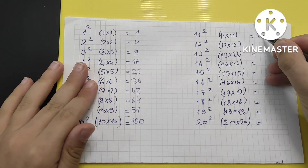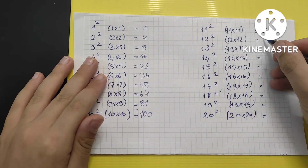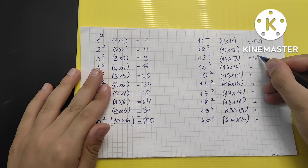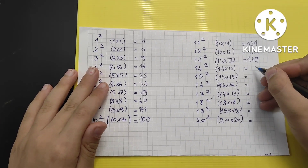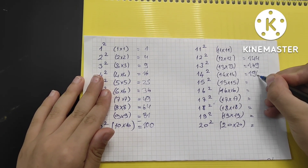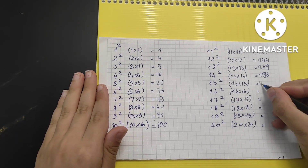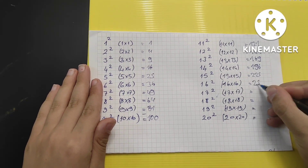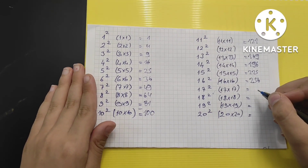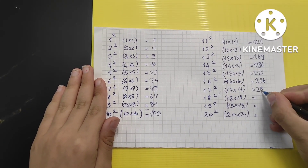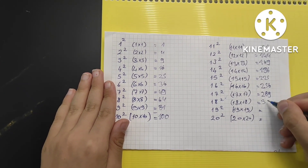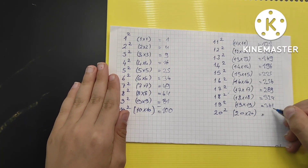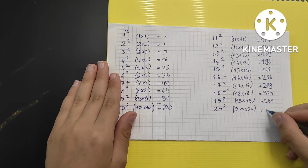11 squared: 121. 12 squared: 144. 13 squared: 169. 14 squared: 196. 15 squared: 225. 16 squared: 256. 17 squared: 289. 18 squared: 324. 19 squared: 361. 20 squared: 400.